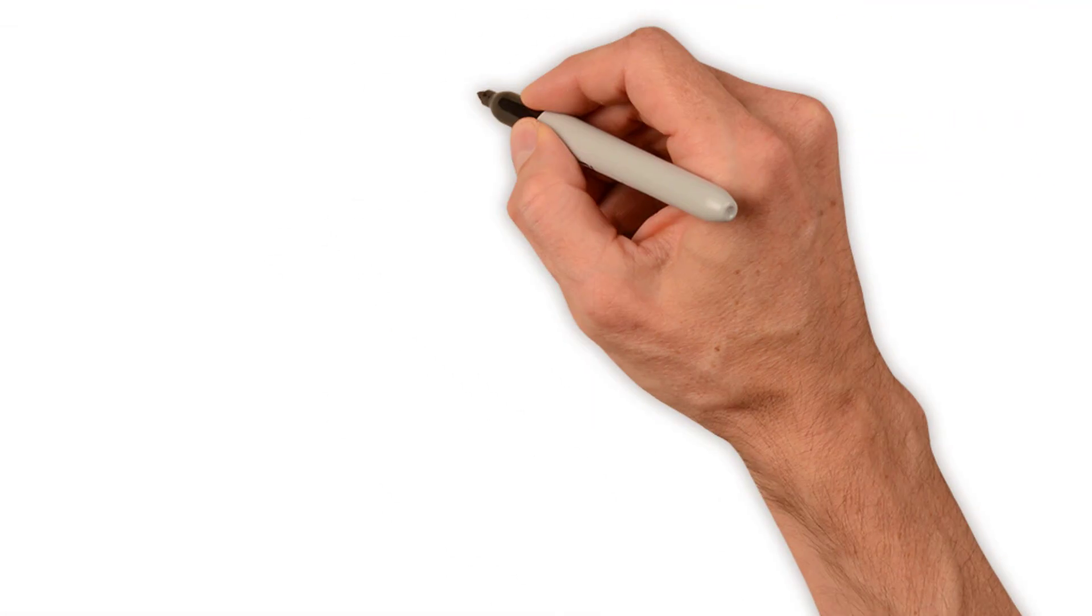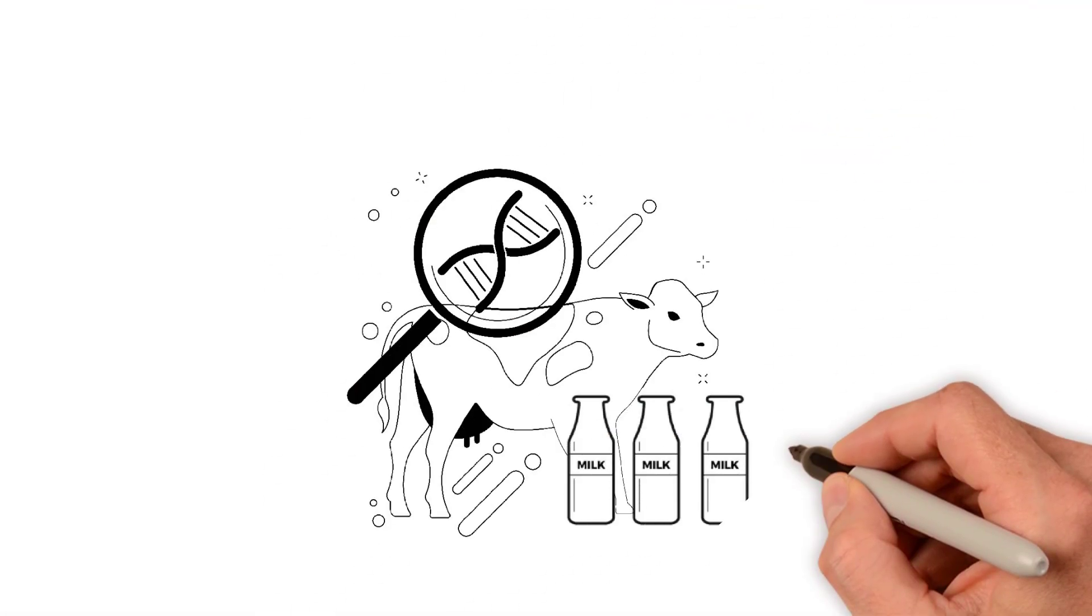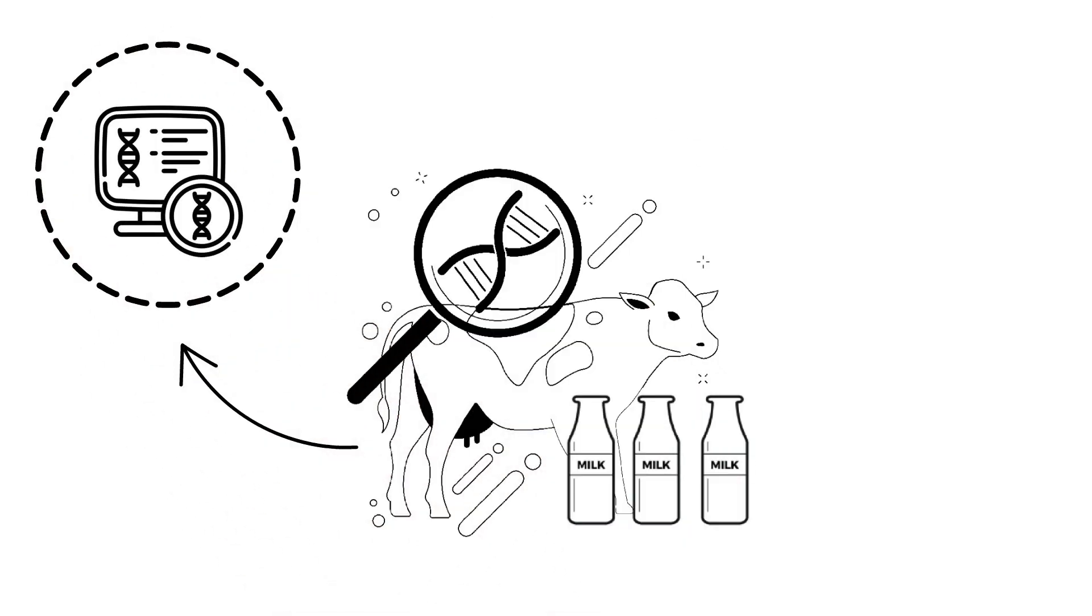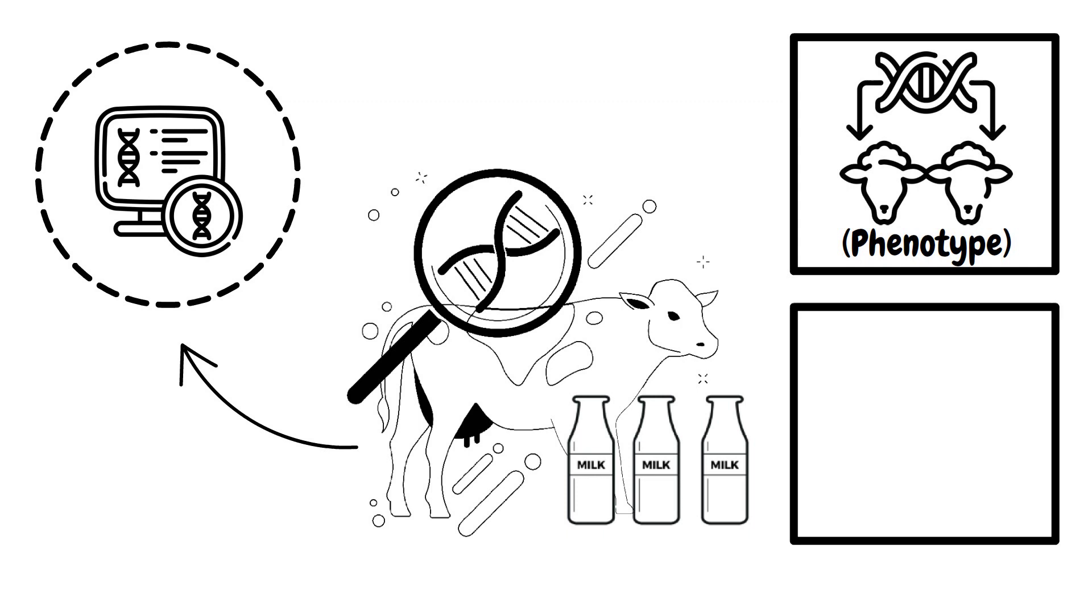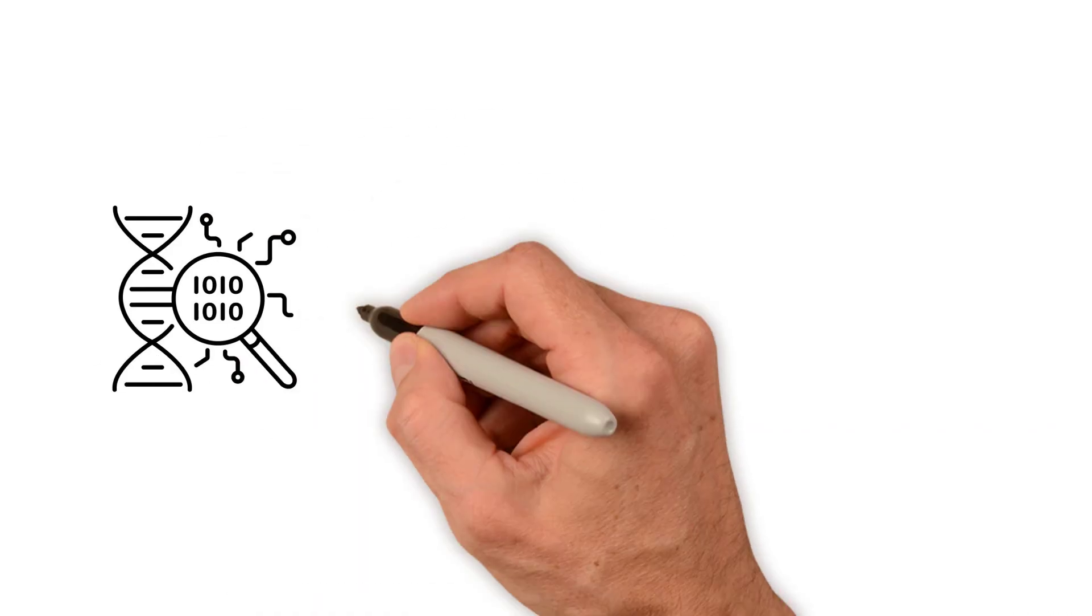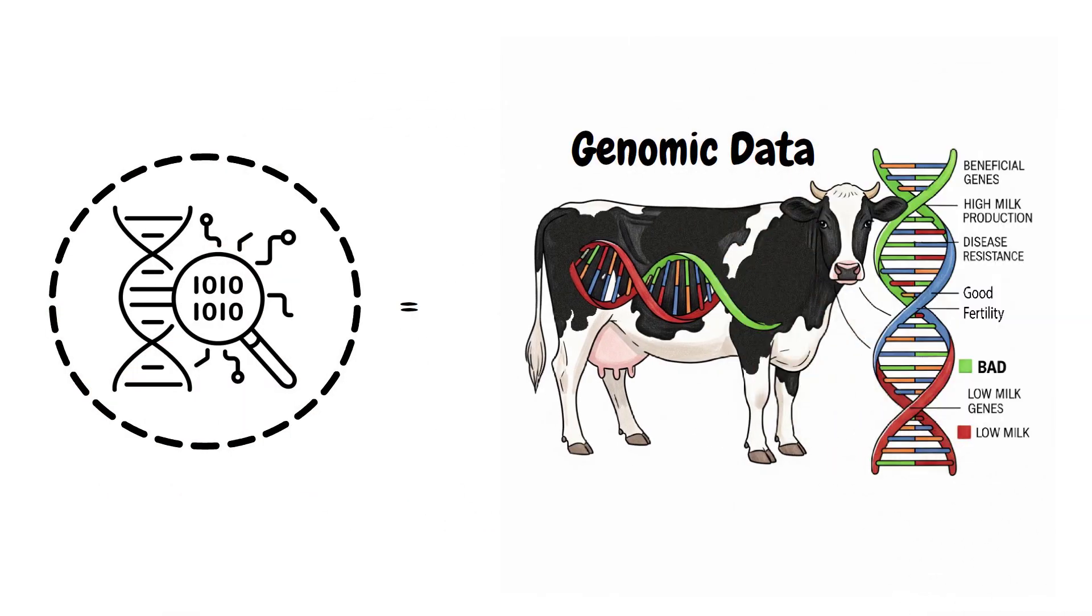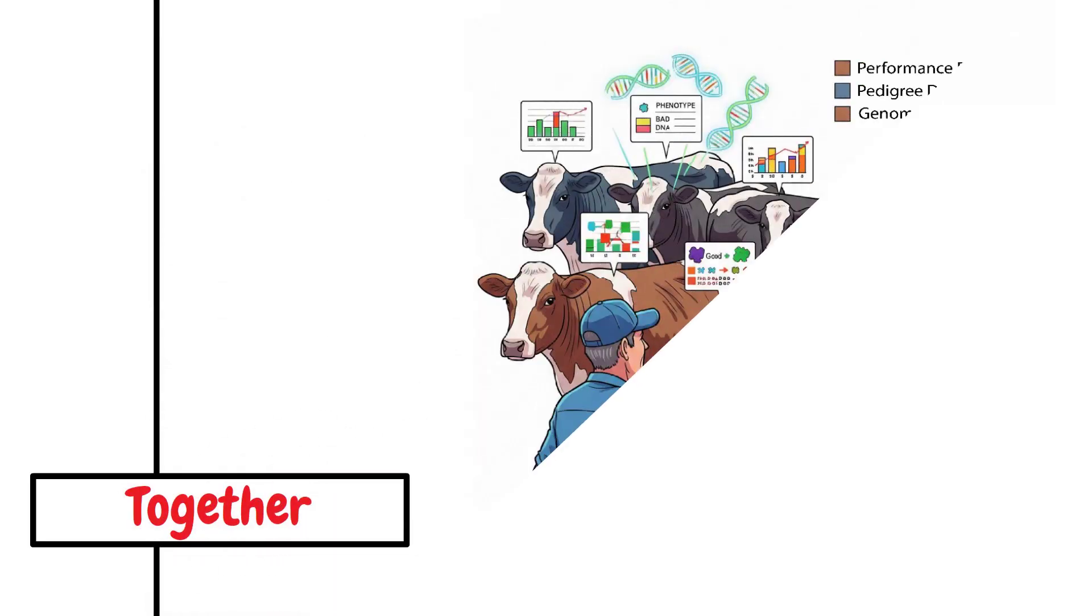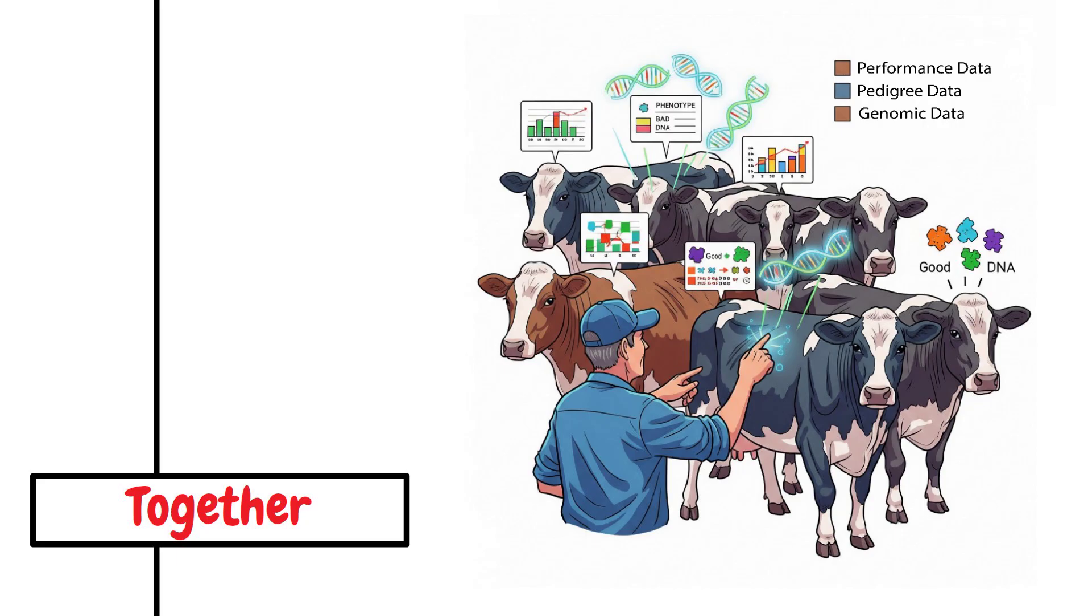In animal breeding, it's important to know an animal's genetic merit. To estimate this, we use multiple sources of data: phenotypes, pedigree, and more recently, genomic data. These data sources work together to guide us in selecting the best animals to breed for an improved next generation.